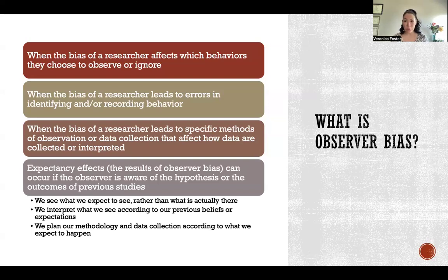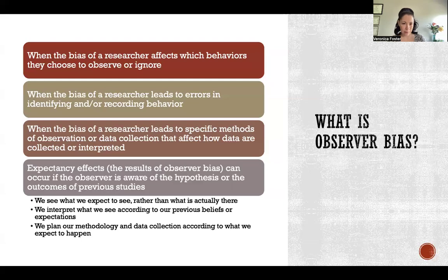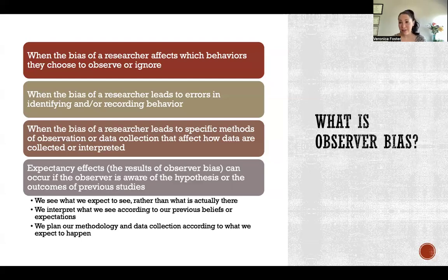In general, most people see what we expect to see rather than what is actually there, and that's a normal human bias that we need to work on controlling so that it doesn't bias our research. We also tend to interpret what we see according to what we expect it to mean or our previous beliefs. Additionally, we might plan methodology or data collection according to what we expect to happen, and that would all be an example of observer bias.